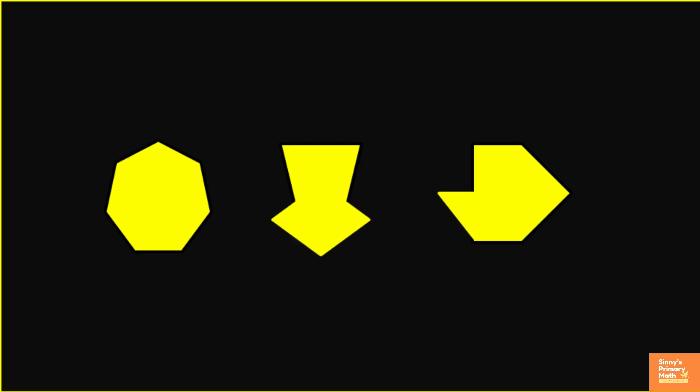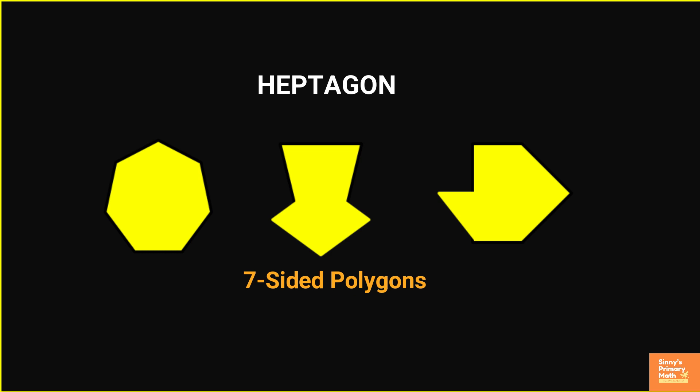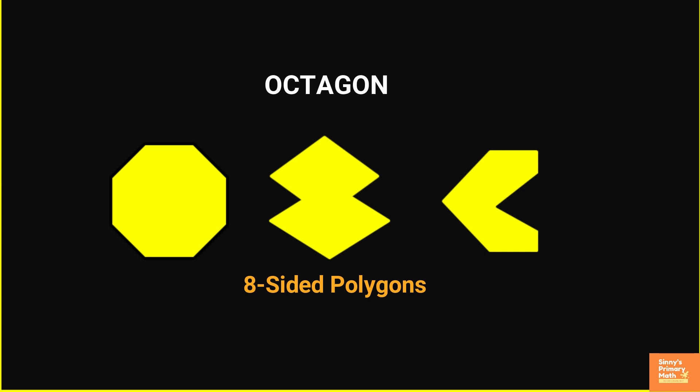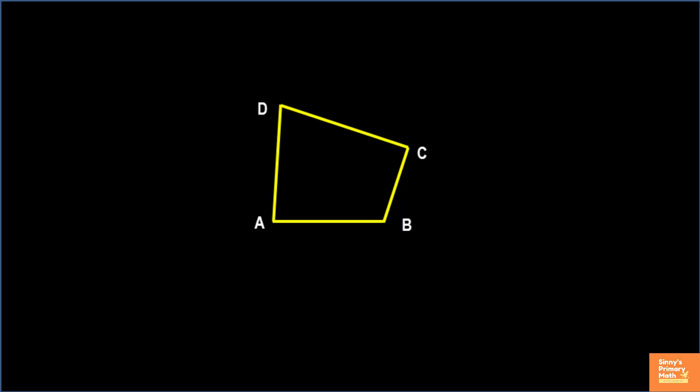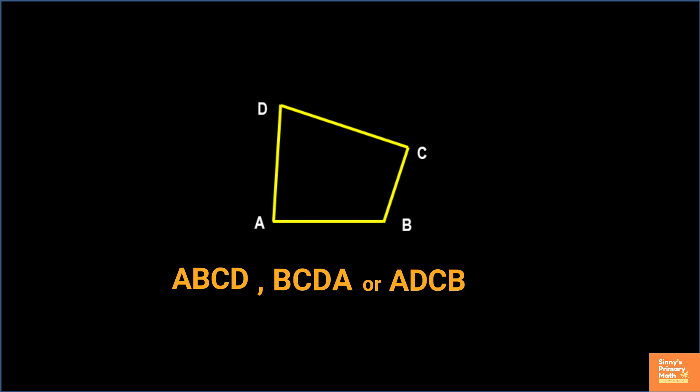However, there are some names that do occur in everyday experience. Five-sided polygons are called pentagons. Six-sided polygons are called hexagons. Seven-sided polygons are called heptagons. Eight-sided polygons are called octagons. A nonagon is a nine-sided polygon. A decagon is a ten-sided polygon. When naming a polygon, its vertices are named in consecutive order, either clockwise or counterclockwise. The four-sided polygon shown could be named, for example, ABCD, BCDA, or ADCB. It does not matter with which letter you begin as long as the vertices are named consecutively.